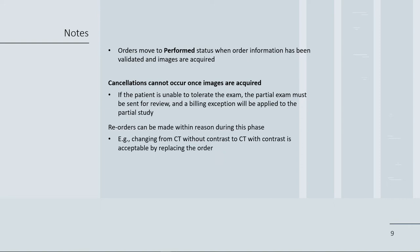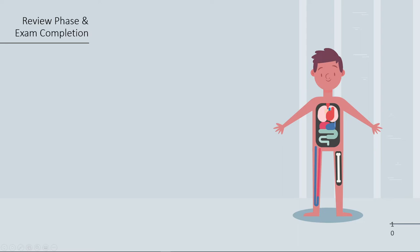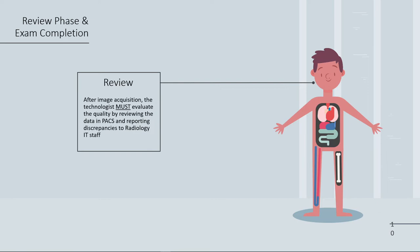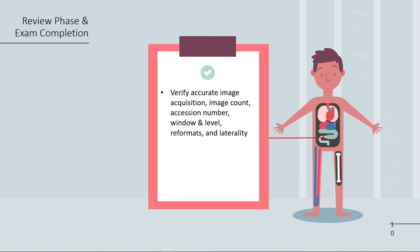Reorders can still be made during this phase within reason. For example, changing from a CT without contrast to a CT with contrast is acceptable by replacing the order. Changes in modality of the exam cannot occur, however — for example, a CT exam cannot become a CR exam. Next, let's take a look at the review phase and exam completion. After image acquisition, the technologist must evaluate the quality by reviewing the data in PACS and reporting any discrepancies to the radiology IT staff. Here, we encounter our second quality hard stop. Once the study is performed, the technologist should verify accurate image acquisition, image count, accession number, window and level, reformats, and laterality.